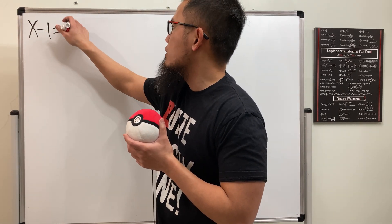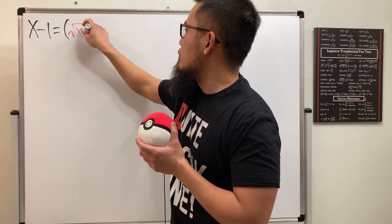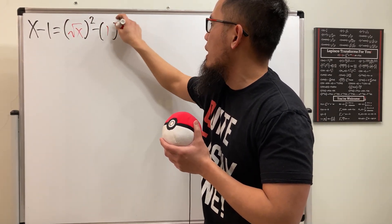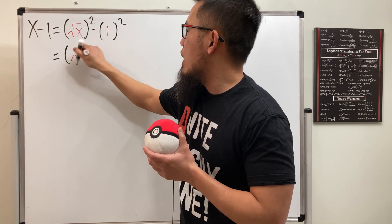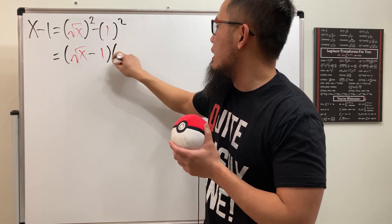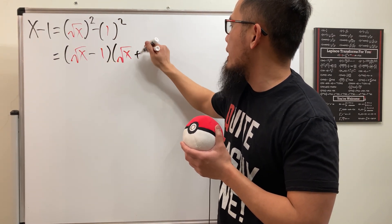First, we're going to consider x minus 1. We're going to factor this, so look at this as square root of x squared minus 1 squared right here. And now factor this, we get square root of x minus 1 times square root of x plus 1.